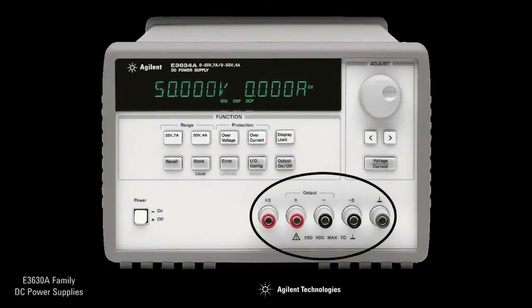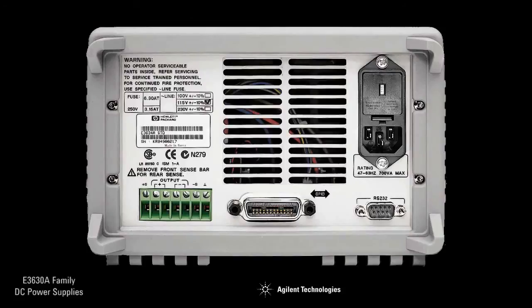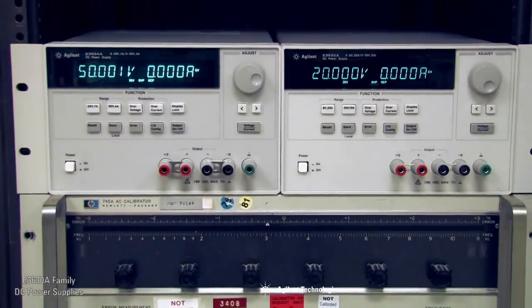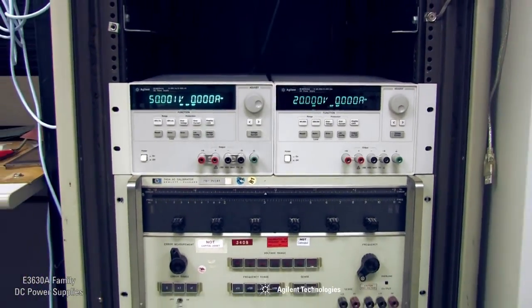Access to these power supplies output and sense connections are made via binding posts on the front panel. Additionally, the E3633A and E34A supplies also have rear output terminals, making them ideal for rack mounting with all wiring routed through the rear connectors.